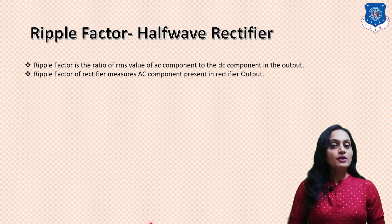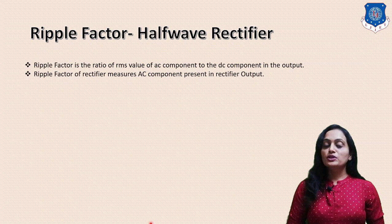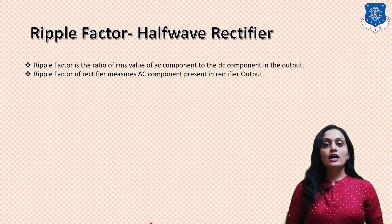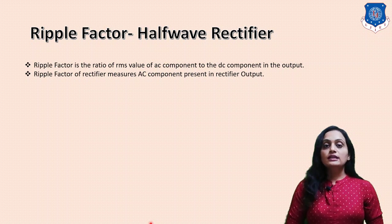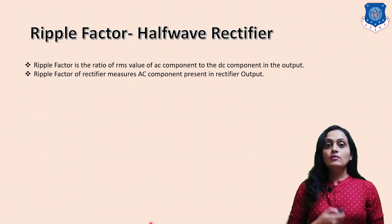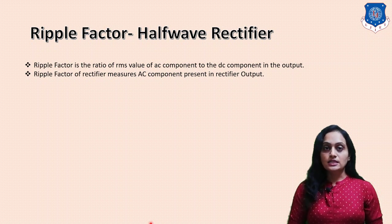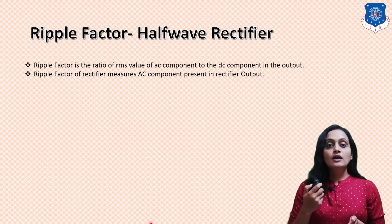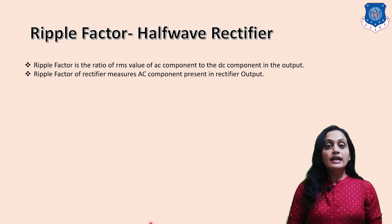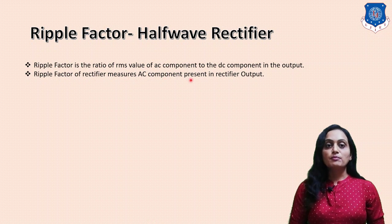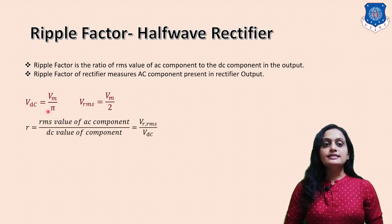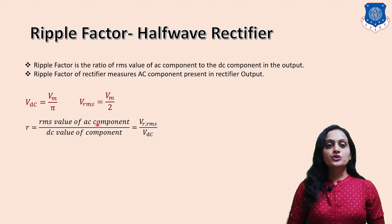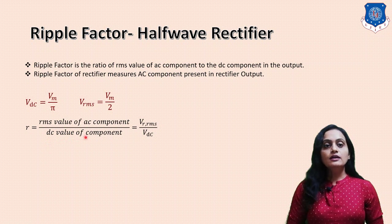Now we will find the ripple factor for the half wave rectifier. The ripple factor is the ratio of the RMS value of the AC component of the output to the DC component of the output signal. The output of the rectifier is not pure DC — it contains some AC component, which is why it is called pulsating DC. The ripple factor tells us how much ripple is present in the rectifier output. For the half wave rectifier, VDC = Vm/π and Vrms = Vm/2.